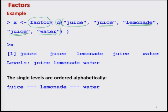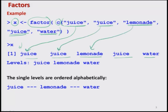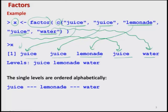I have simply taken a vector of some strings with 5 observations. The first observation is juice, second is juice, third is lemonade, fourth is juice, and fifth is water. These values are combined by the C operator and we are interested in finding the factor of this vector, stored in variable X. On the R console, we get the output: juice, juice, lemonade, juice, water. It is showing that there are 3 levels: juice, lemonade, and water.